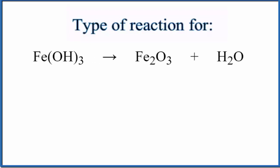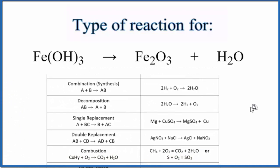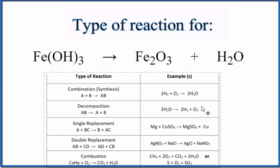If we look at this table here, we can see the common types of reactions. Looking down the table, we see here's a decomposition reaction, and it follows this format: AB yields A plus B.